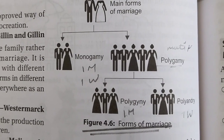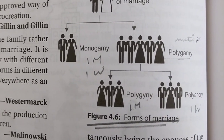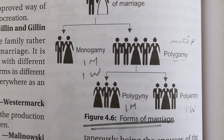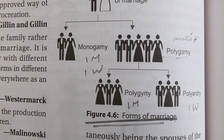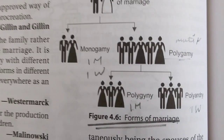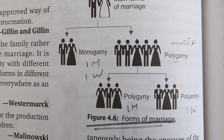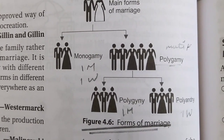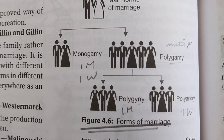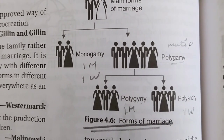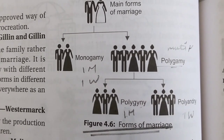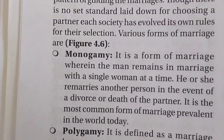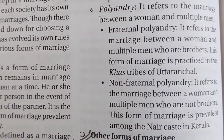Next is Forms of Marriage. We will discuss this in a diagram. On the basis of marriage, we describe monogamy and polygamy. In monogamy there is a single marriage. In polygamy there are two types: polyandry and polygyny. Polyandry means multiple males and one female. Polygyny means multiple females and one male. So in forms of marriage we have monogamy, polygyny, and polyandry.